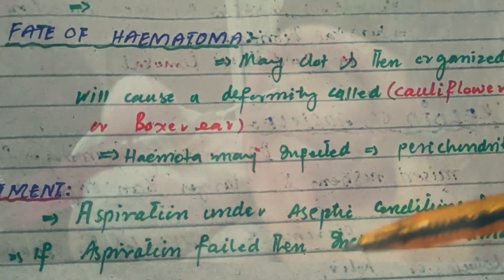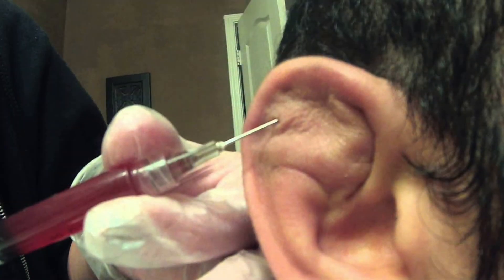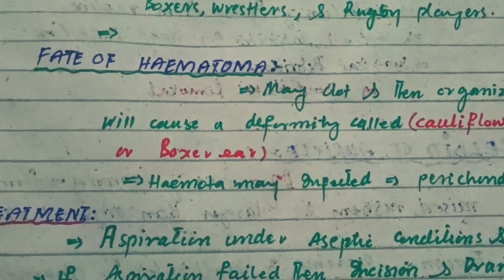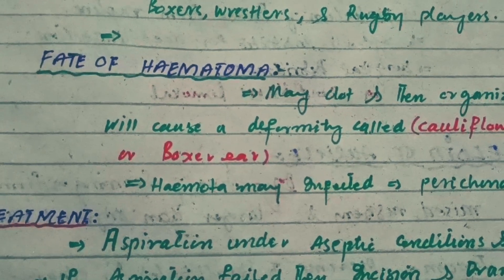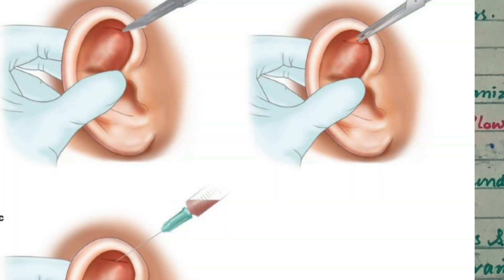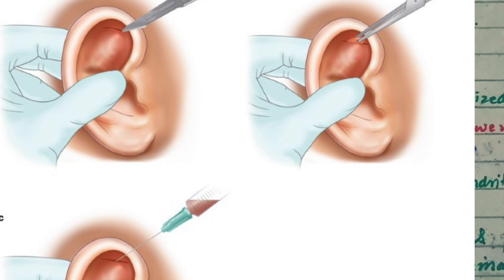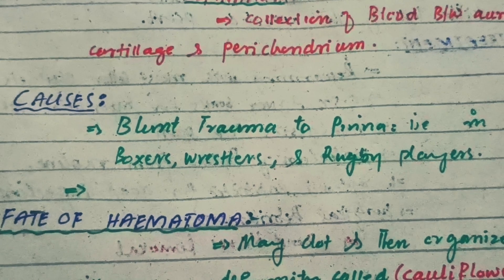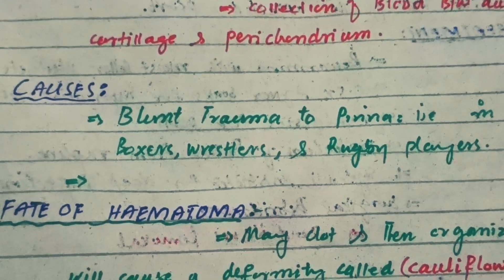To treat the hematoma, it should be aspirated under aseptic conditions with a pressure dressing applied. If aspiration fails, the hematoma should be surgically drained by incision. That was all about hematoma of the auricle. The next traumatic disorders will be discussed in separate videos. Thanks for watching.